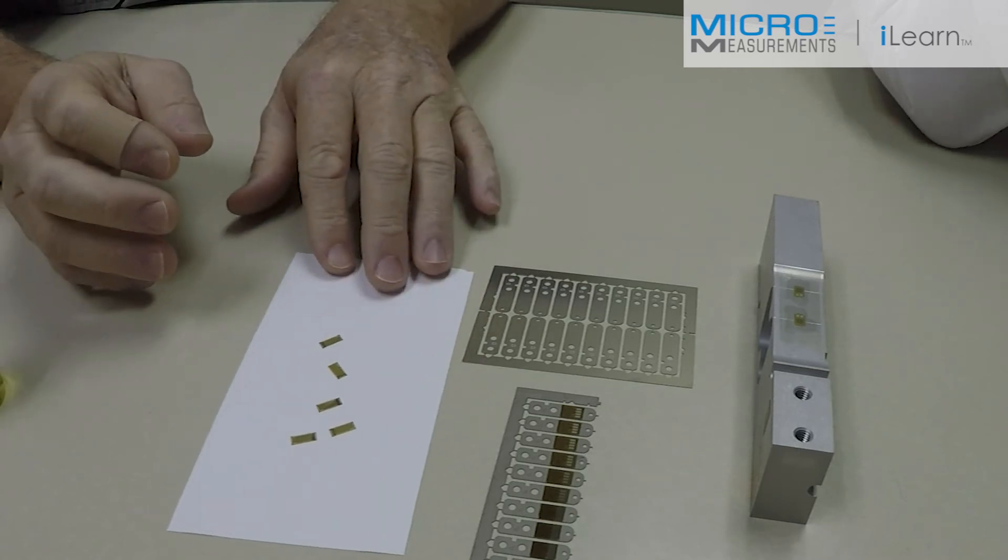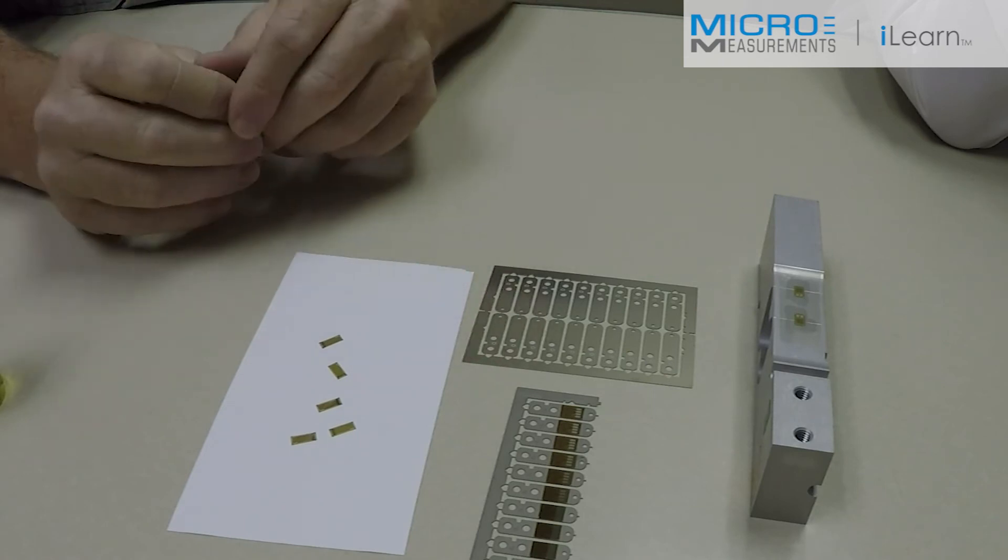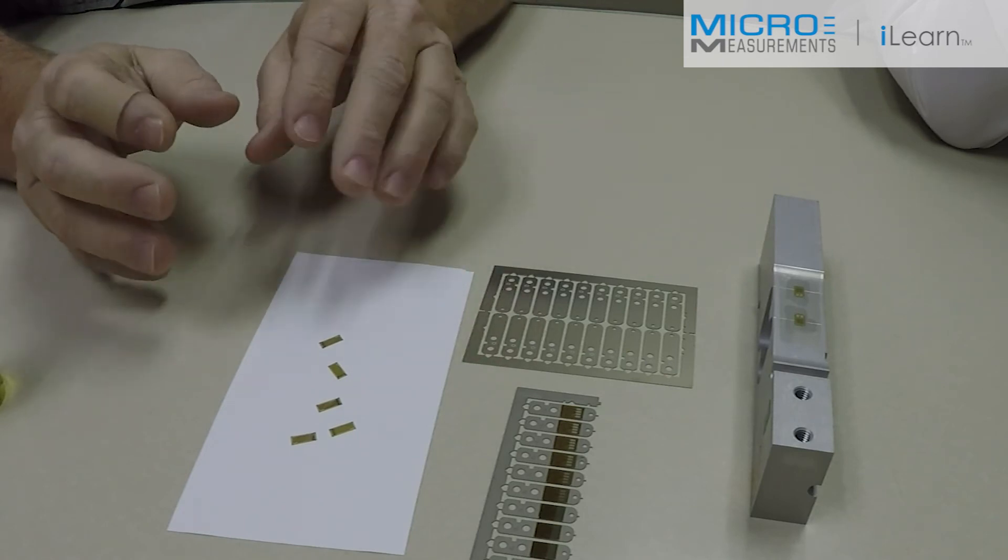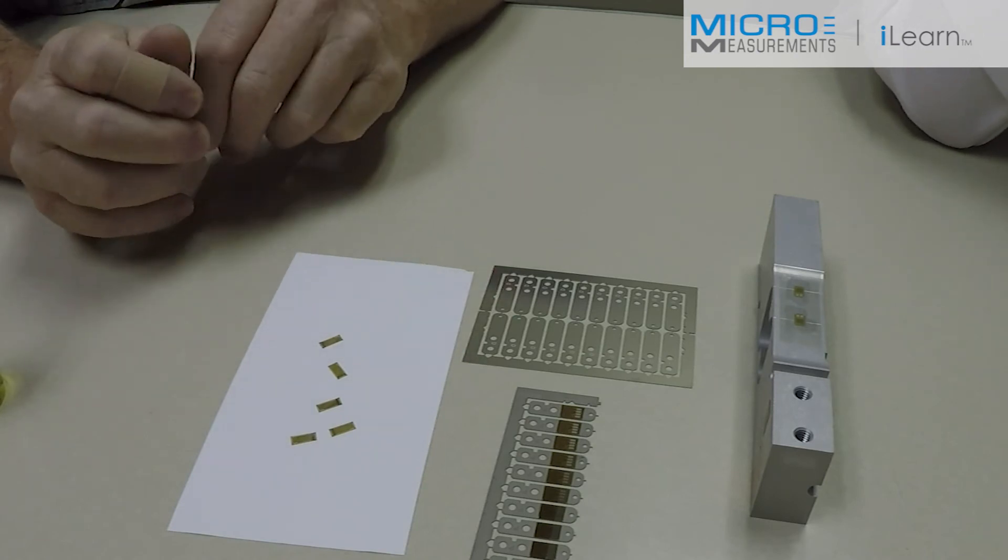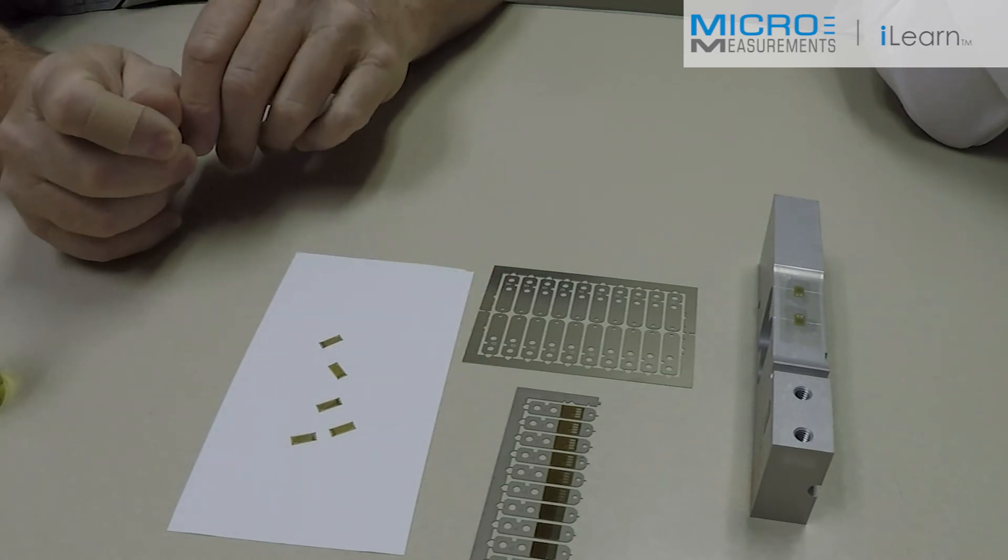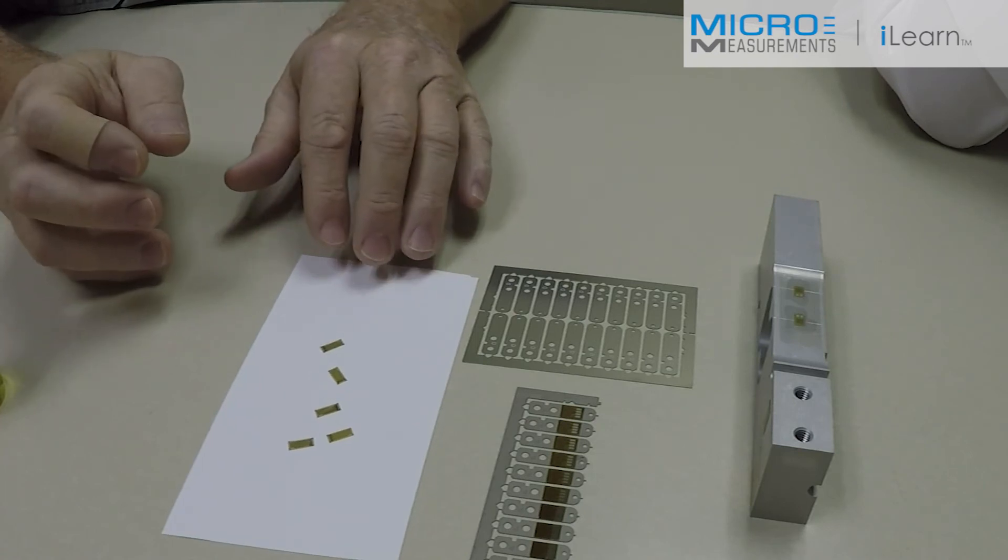The downside is that the gauges have pre-applied epoxy adhesive on them, so you have to store them in a clean environment and particularly away from moisture because the epoxy will absorb water.